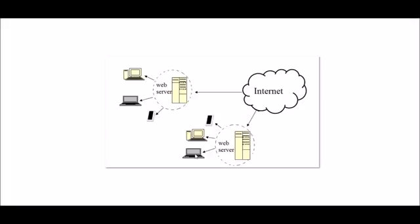For a better understanding, suppose you have a friend and he is uploading a photo to Facebook. When he uploads a photo, that photo is actually stored on the Facebook web server. To see the photo, you need a device — maybe a mobile or laptop — and an internet connection. With these two things, you can connect to the Facebook server and see your friend's photo. This is basically what a distributed computing application is.